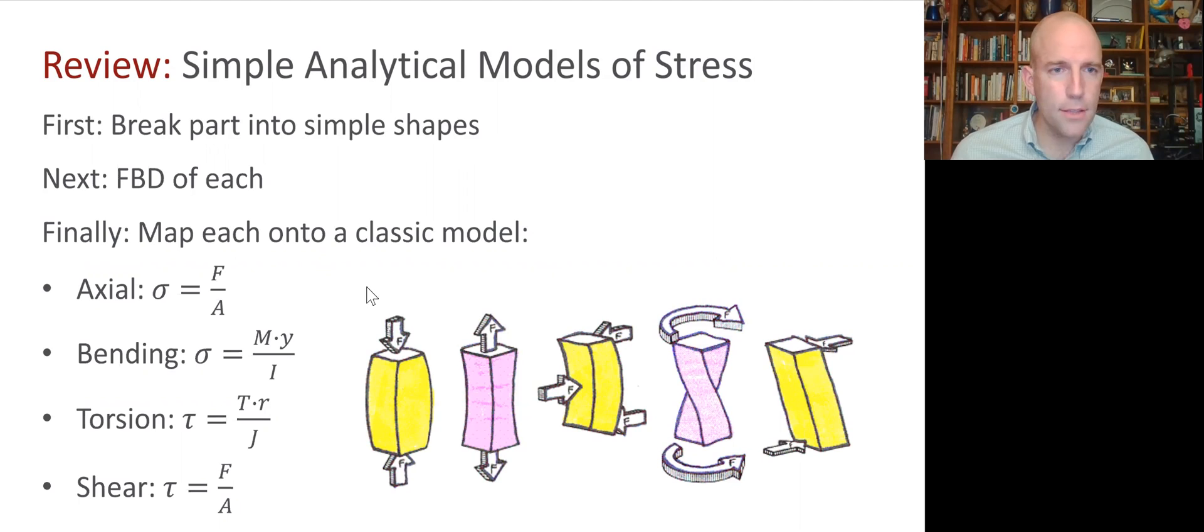And then finally, we'll use one of our classic models. Maybe axial stress, that's the axial force divided by the cross-sectional area. Bending stress, very important one, MY over I, where M is the bending moment at that cut surface. Y is the distance of the outer edge from the centroid to get peak stress. And I is the cross-sectional area moment of inertia.